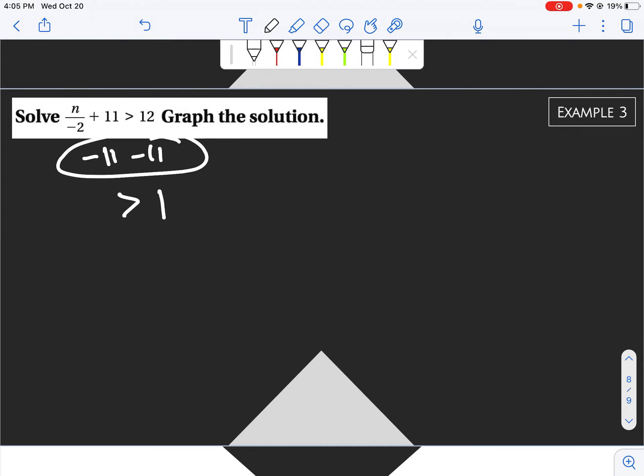You'll get sick of me saying it, but we only switch our sign when we are multiplying or dividing by a negative number. Now we are left with n over negative 2. So n divided by negative 2. To get n by itself, we need to multiply by negative 2.